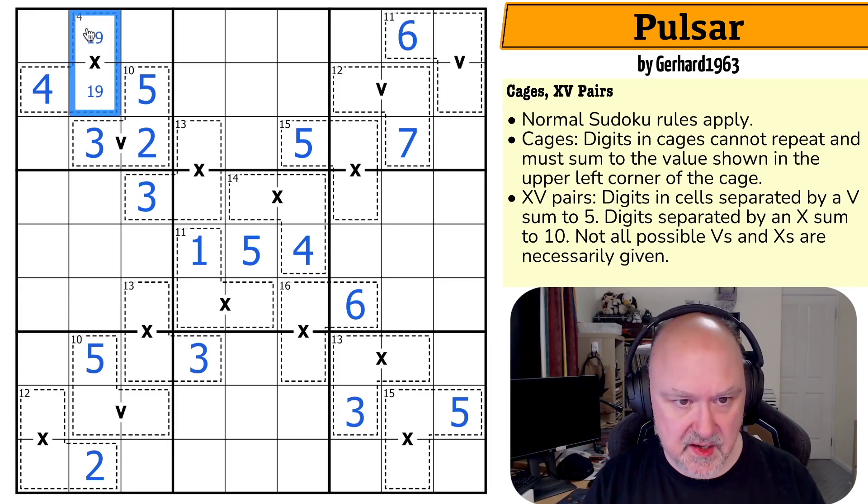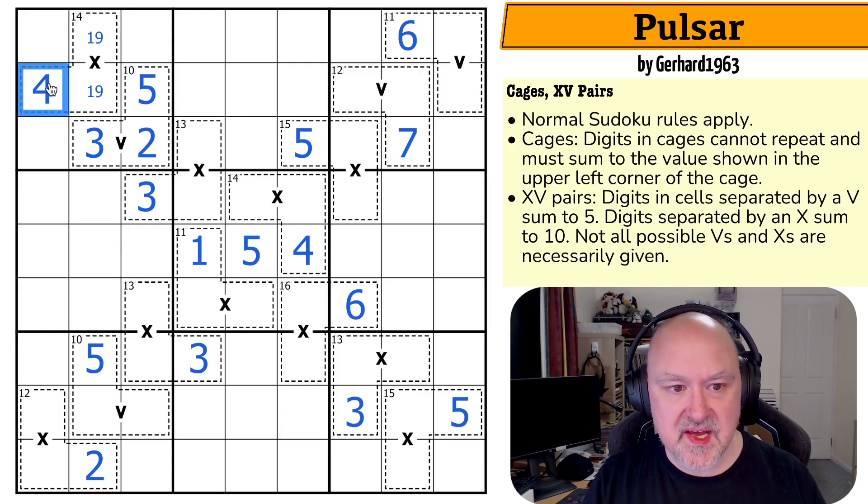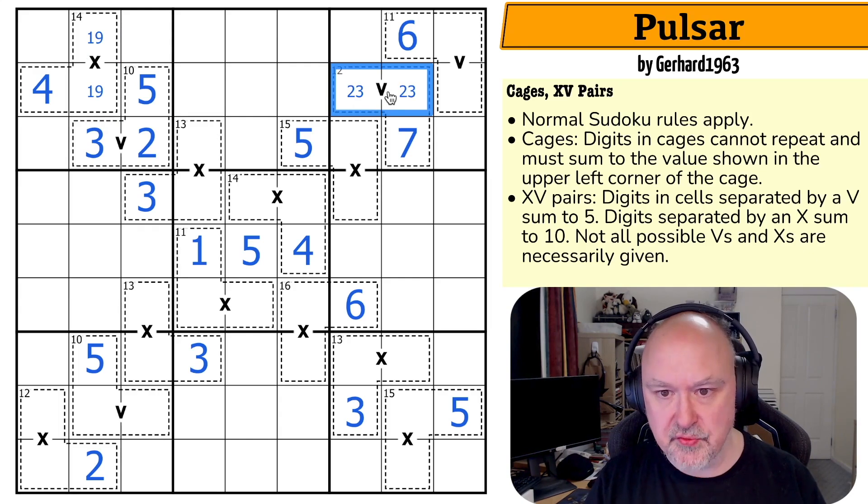So this is a one-nine. Let's use the correct pencil marks. So this is a one-nine. The four here also says that this has to be two-three, which means that this has to be one, this has to be one-four. And this very same four is telling us that that's the one and that's the four.